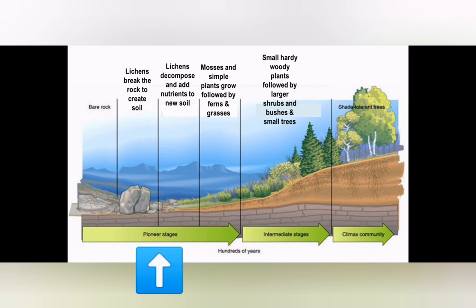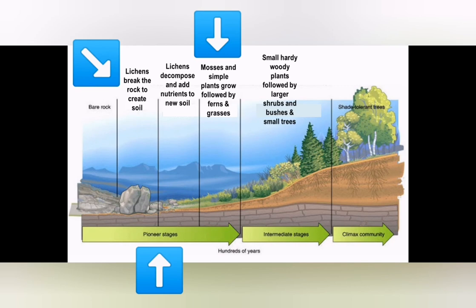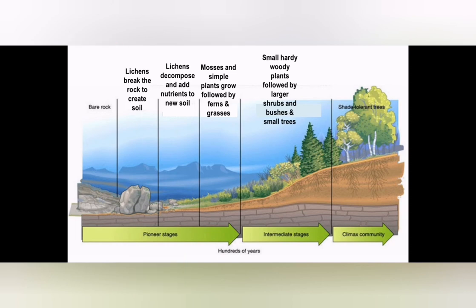This first stage is called the pioneer stage. During the pioneer stage, lichens start to grow on the rock, breaking it up to create soil. As they grow and decompose, they add nutrients into the new soil. Once there is a tiny bit of nutrient-rich soil, mosses — the simplest plant — start growing in any hollowed area, followed by ferns and grasses. As these plants grow, they crack open more rock to produce more soil and keep adding mineral elements through decomposition.